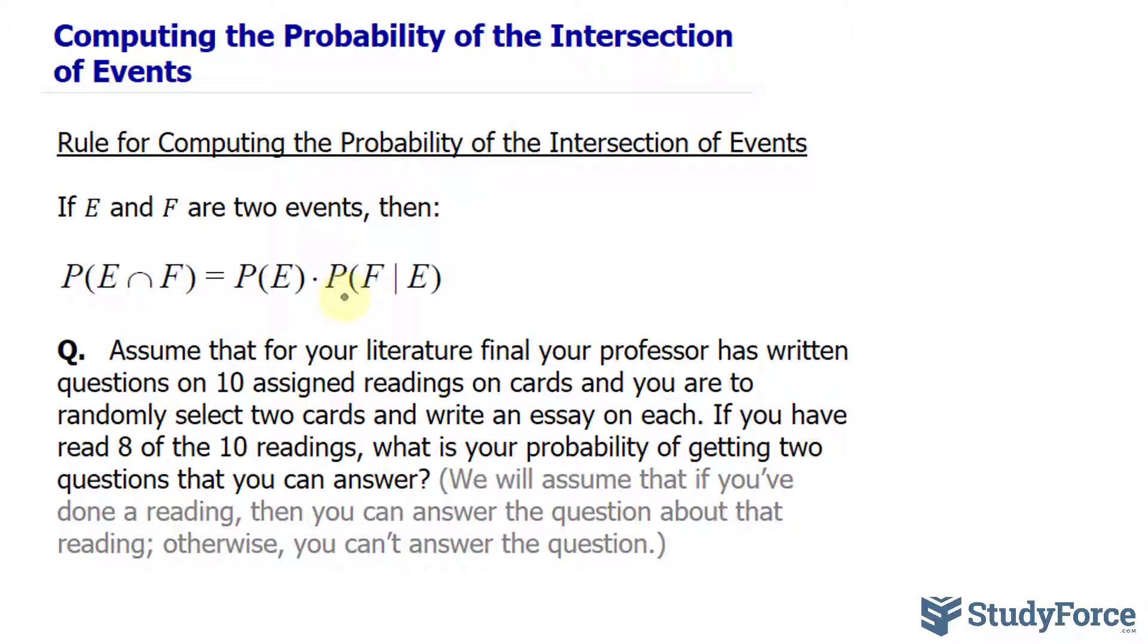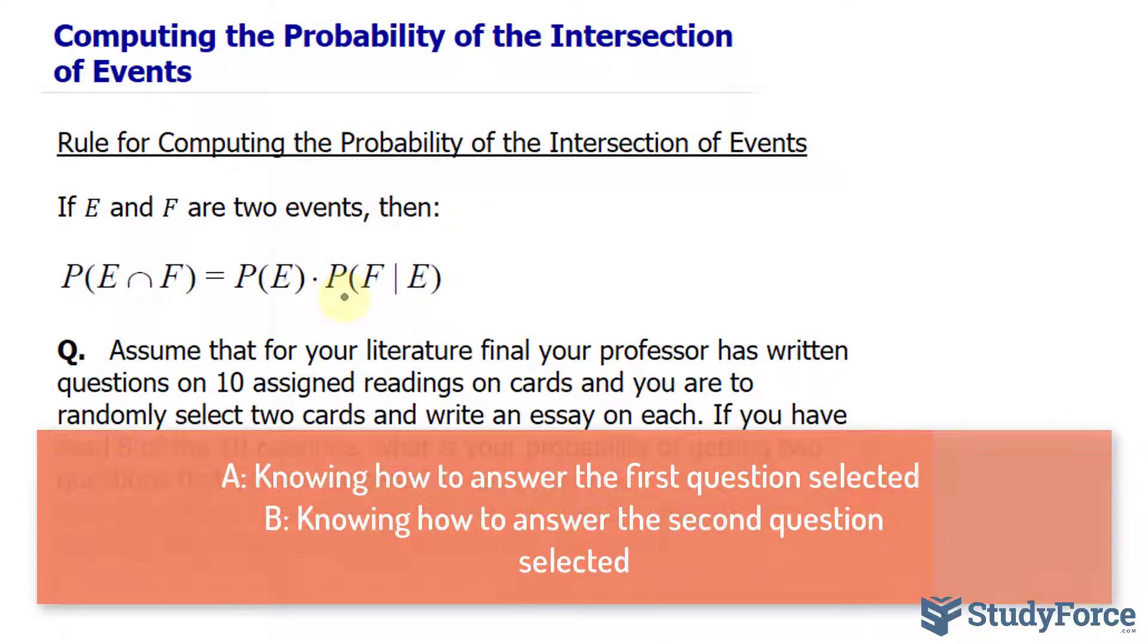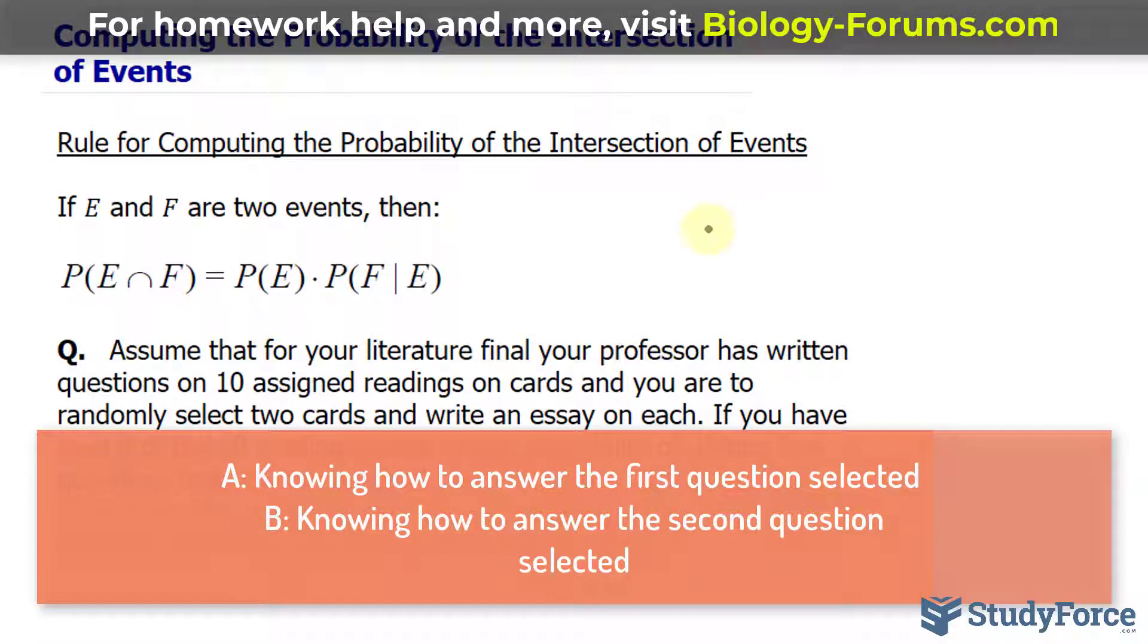We can break this scenario down into two events. Let's call these events A and B for simplicity. A represents the event that you can answer the first question and B represents the event that you can answer the second question that you choose.